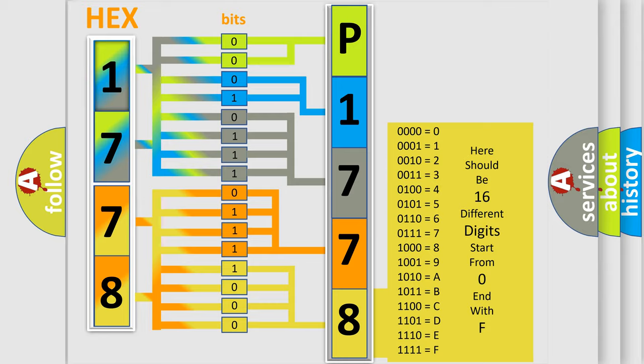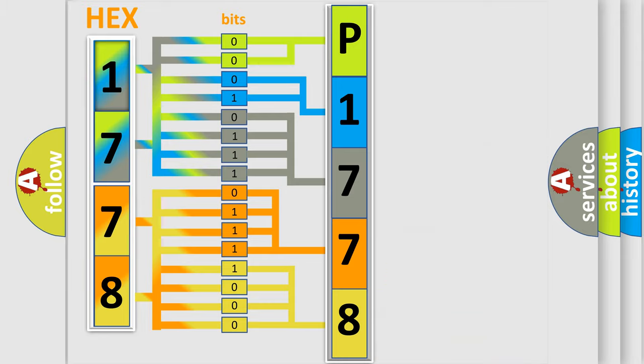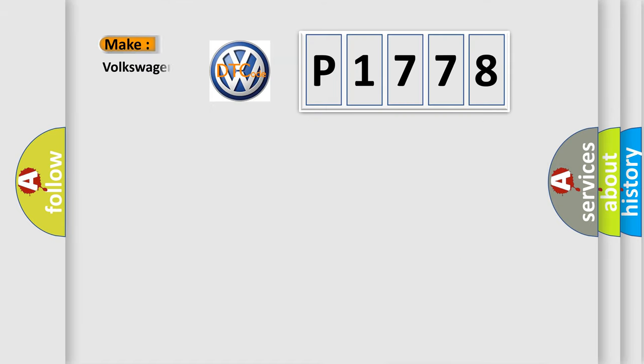We now know in what way the diagnostic tool translates the received information into a more comprehensible format. The number itself does not make sense to us if we cannot assign information about what it actually expresses. So, what does the diagnostic trouble code P1778 interpret specifically for Volkswagen car manufacturers?